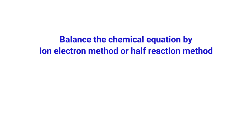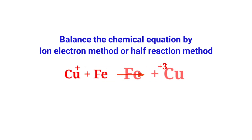Balance the chemical equation by the ion electron method, also known as the half reaction method. The example reaction is: Copper ion plus Iron gives Iron 3+ ion plus Copper.